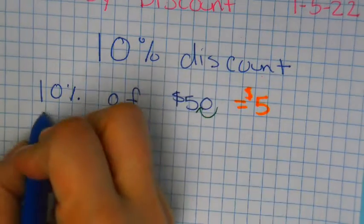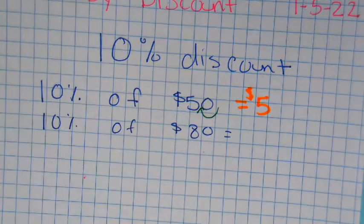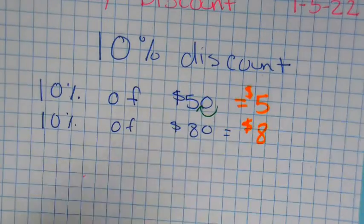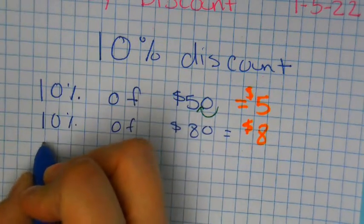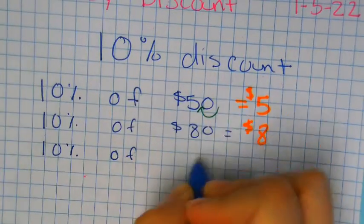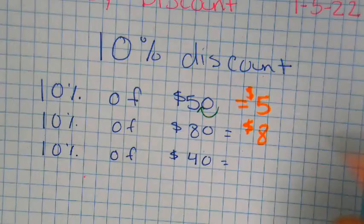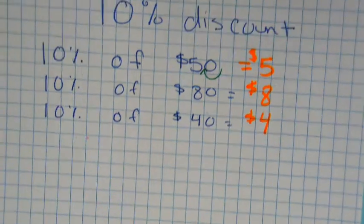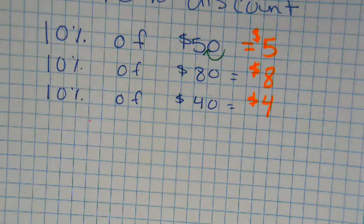What is 10% of 80 dollars? Eight. See if you can figure out the pattern. 10% of 40 dollars — four. You see it? See the pattern? You know how yesterday we multiplied and all that — here it's a different way. You don't really do heavy math, you just kind of look at it.